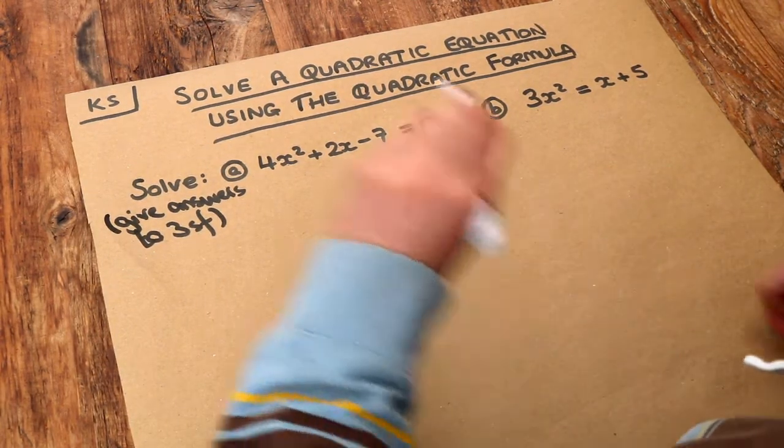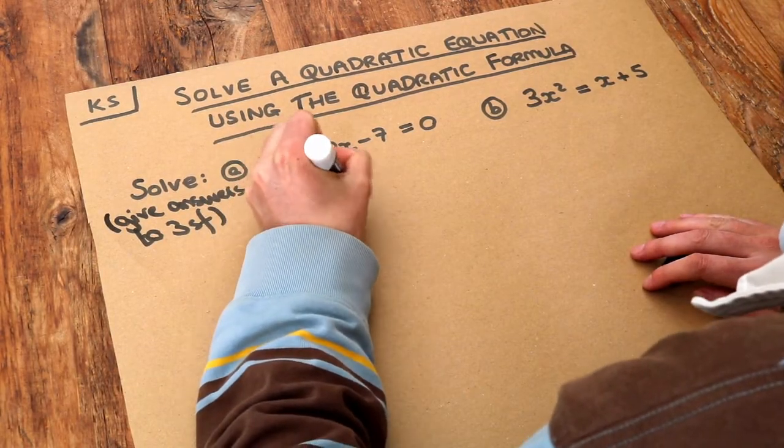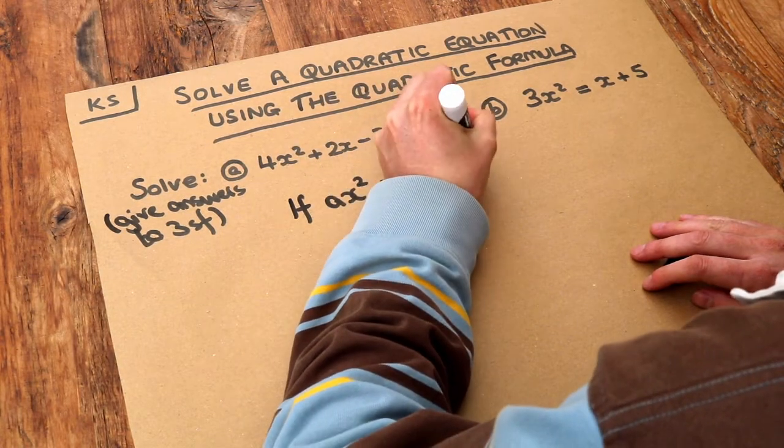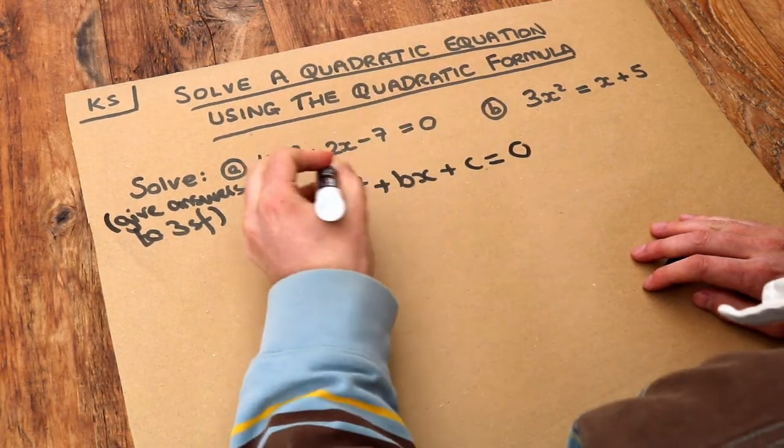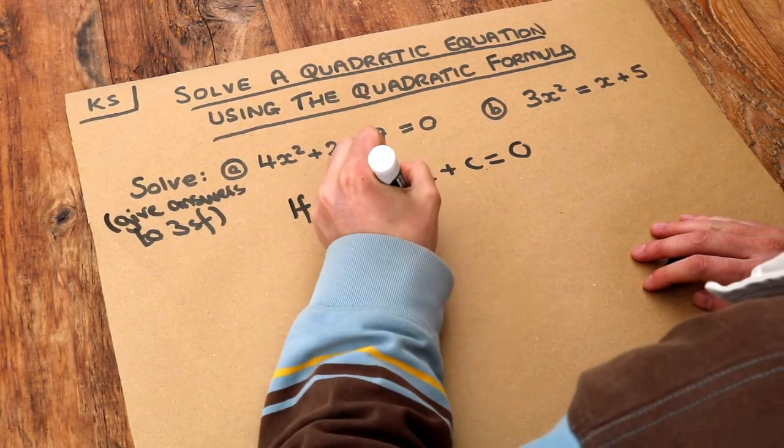Now I'm not going to prove it but I'll just tell you what the quadratic formula is. If you have a quadratic of the form ax squared plus bx plus c equals zero, then we can get the solutions for x by using this complicated expression here.